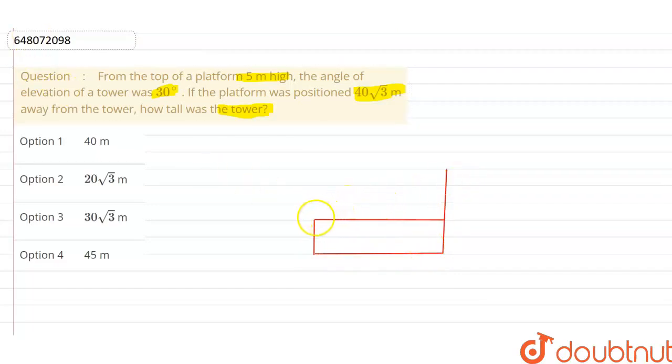इसके बाद बात करें angle of elevation की. तो angle of elevation कितना दे रखा है आपको, ये दे रखा है आपको 30 degree. तो यहाँ पर हम इसे लिखेंगे 30 degree. ये angle of elevation कितना है आपका, ये है आपका 30 degree.